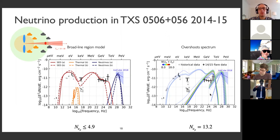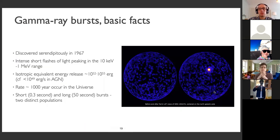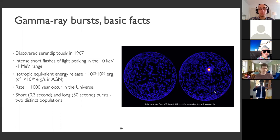Okay, this is what I wanted to say about flares. I'm going to now switch gears and talk about the rest of the sources — popular candidates for neutrinos and neutrino-producing sources — starting with gamma ray bursts.